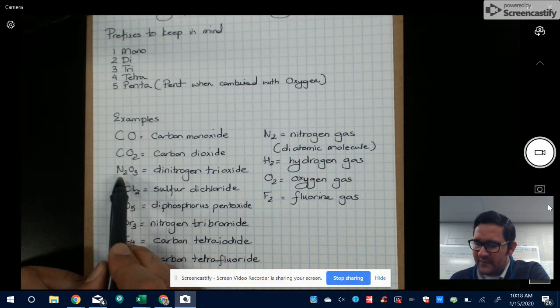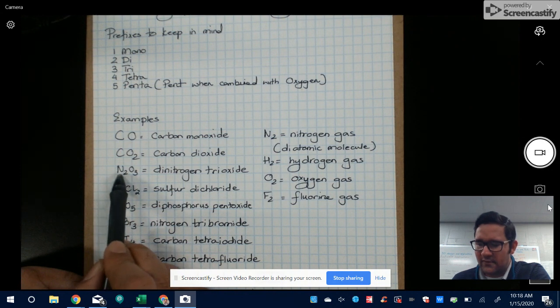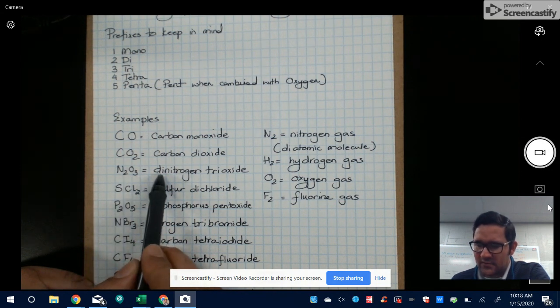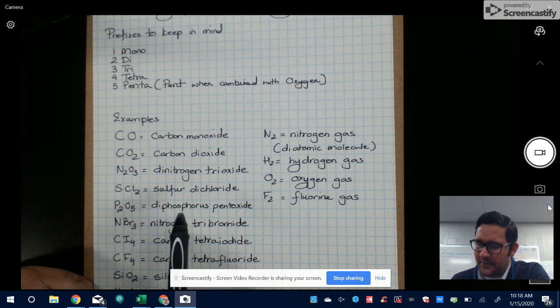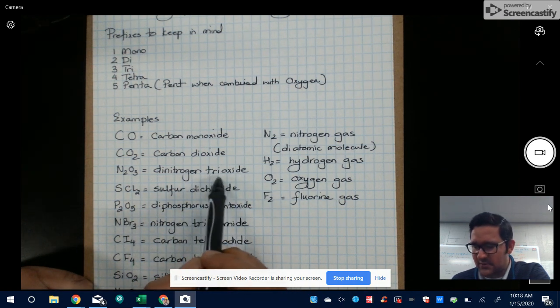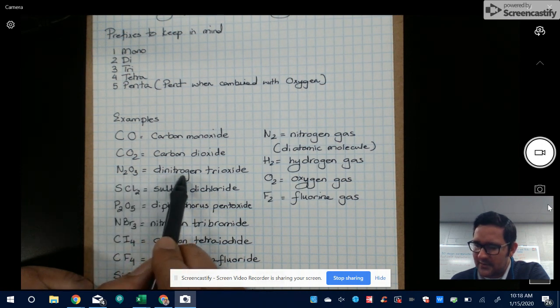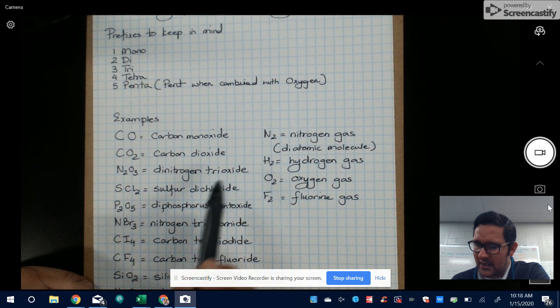Third example, you have two nitrogens. So when you have two nitrogens or three or four or five, then you want to definitely use the prefix for the first element. The second element, you always use a prefix, whether it's one, two, three, four or five. So this is two nitrogens, so it's dinitrogen. And then three oxygens, so it's trioxide.